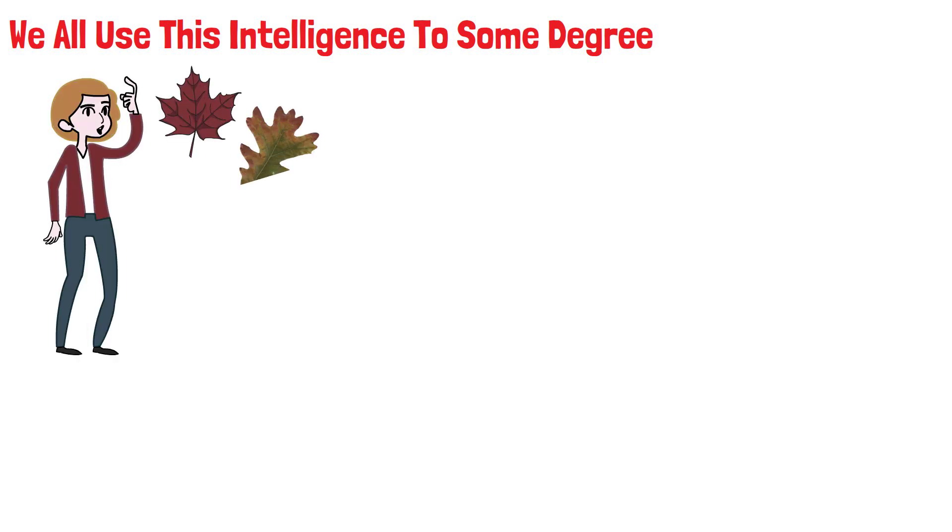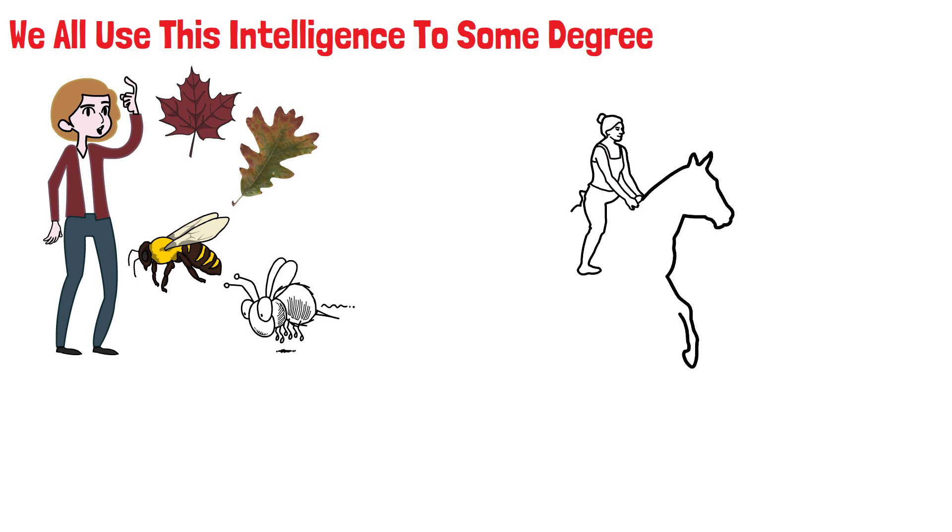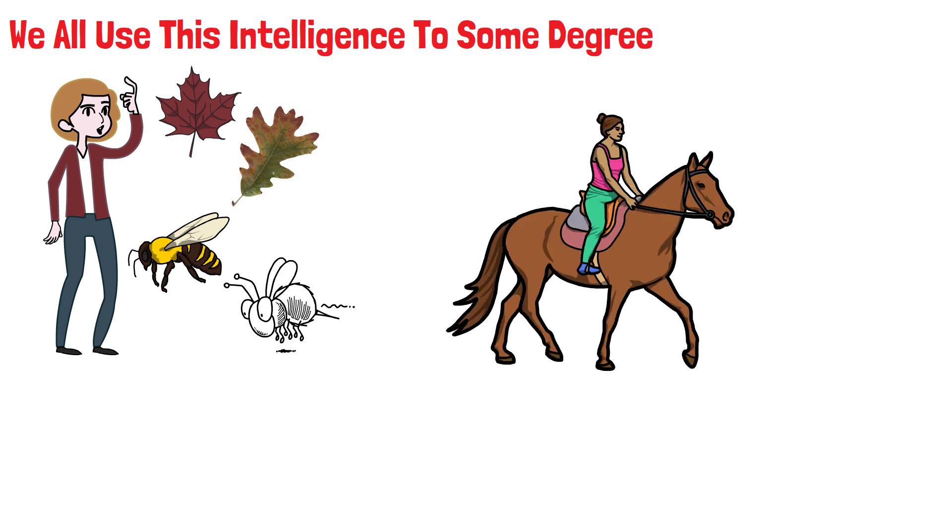We all use this intelligence to some degree. It's what helps us distinguish between a maple and an oak tree, or know that a bee is different from a wasp. But those with exceptionally high naturalistic intelligence have an almost uncanny knack for understanding and relating to the natural environment.